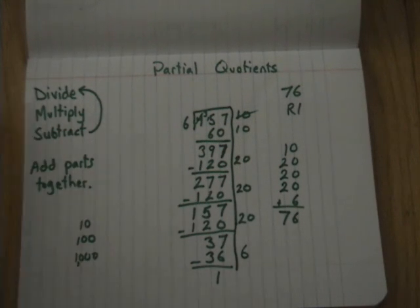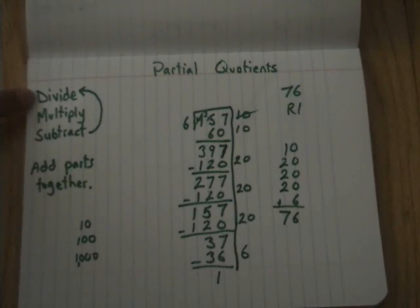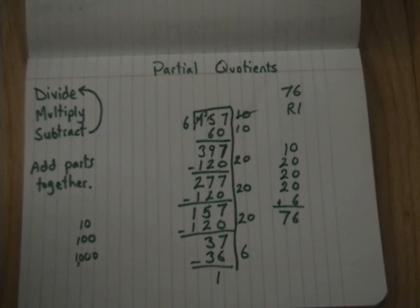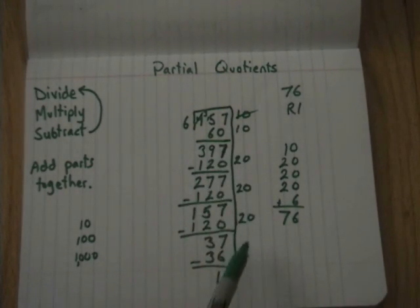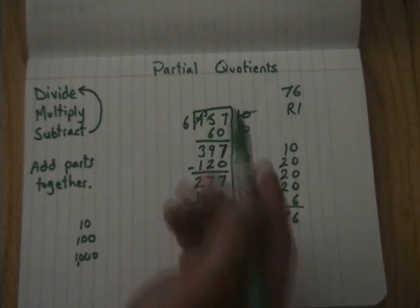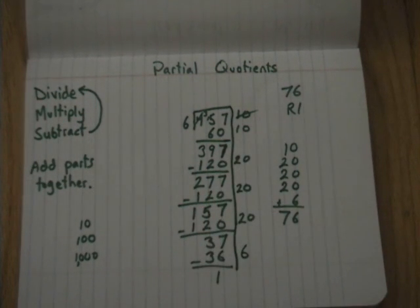Again, that's the partial quotients. Your steps are right here. Divide, multiply, subtract. And then at the very end, you've got to add the parts together. Because you're doing parts of your quotient. But again, this is kind of sort of a freestyle algorithm. You can kind of, I mean there's tons of different solutions that you could do here. If you wanted to do 10 down the whole way, you might have found 20 right away. There's a lot of different ways this algorithm would work. But it does work every time. And that's the partial quotients algorithm.